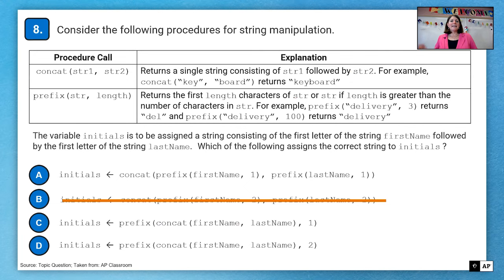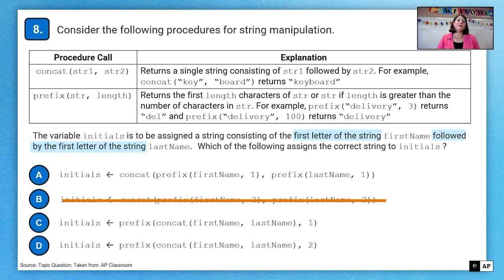Question eight. Consider the following procedures for string manipulation. We have concat and we have prefix. The variable initials is to be assigned a string consisting of the first letter of the string firstname, followed by the first letter of the string lastname. Which of the following assigns the correct string to initials?